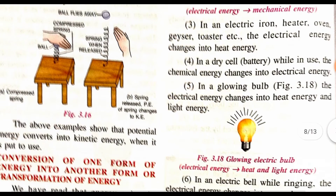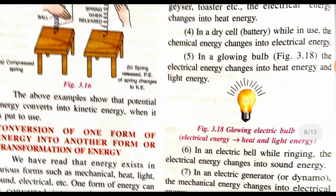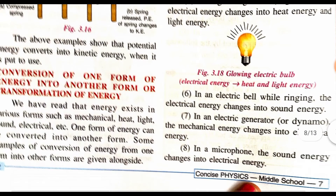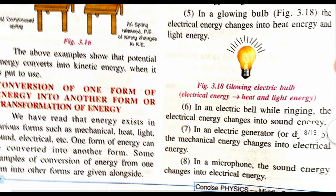In a dry cell in use, chemical energy changes into electrical energy — because of the cell or battery, the device is able to run. In a glowing bulb, electrical energy is converted into heat and light energy, so the bulb glows. In an electrical bell while ringing, electrical energy is converted into sound energy, so we hear the bell.